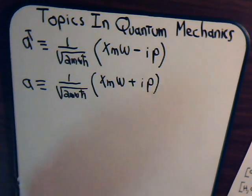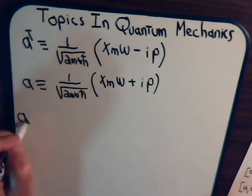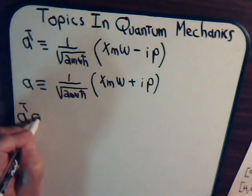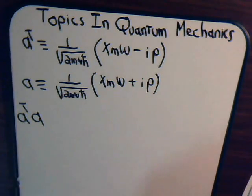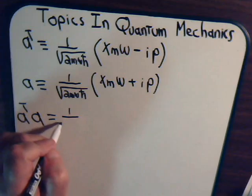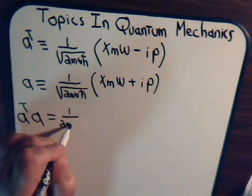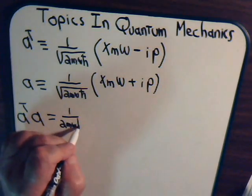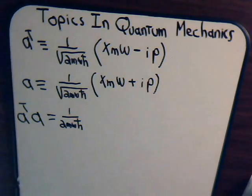So, now we want to find an expression for a dagger a. So, we have this times this. So, here we're going to have 1 over 2m omega h-bar.